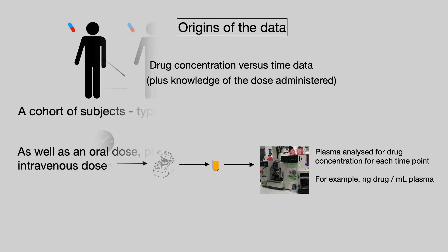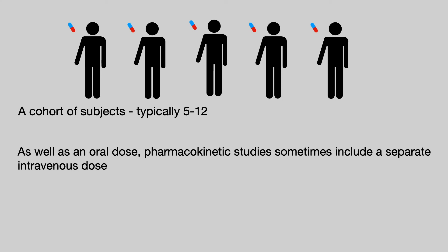Of course, we don't do this in a single individual. We use a cohort of subjects. And in a typical pharmacokinetic study, that is anywhere between 5 and 12 individuals.